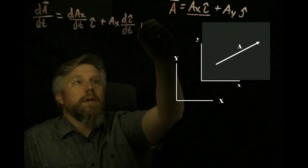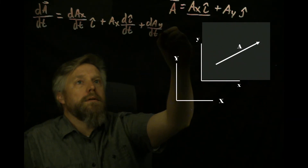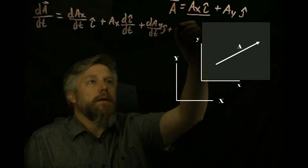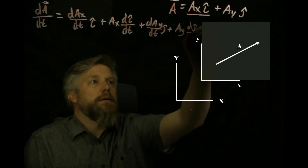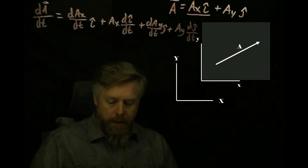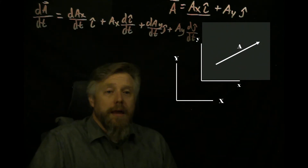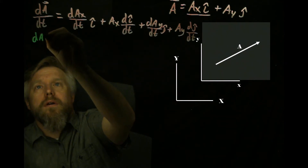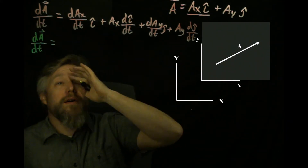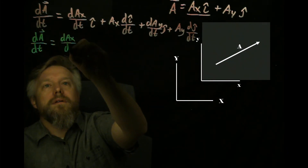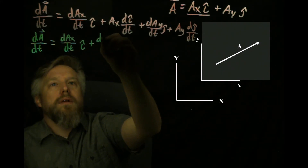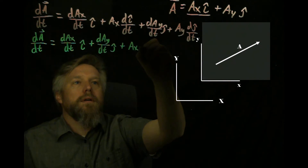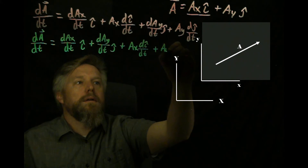Applying the product rule gives: dA_x/dt times I plus A_x times dI/dt for the first term, and dA_y/dt times J plus A_y times dJ/dt for the second. So we have our derivative of vector A with four terms — some familiar, some new.